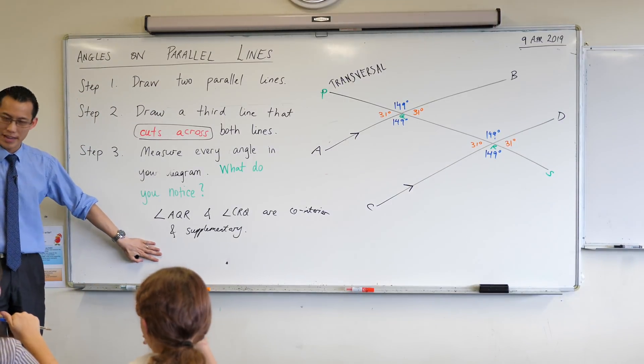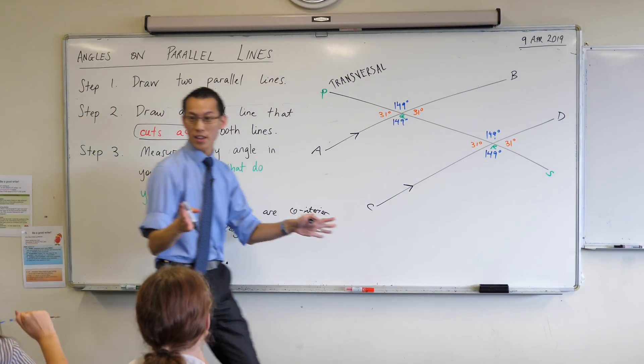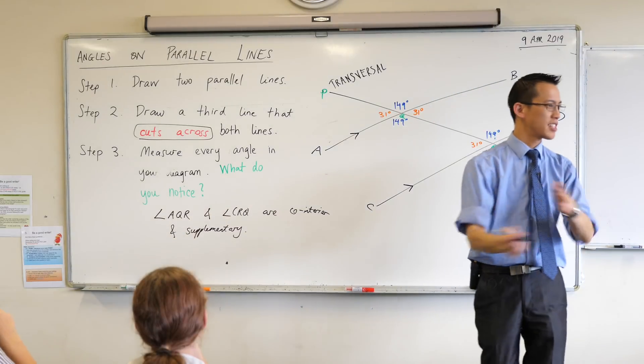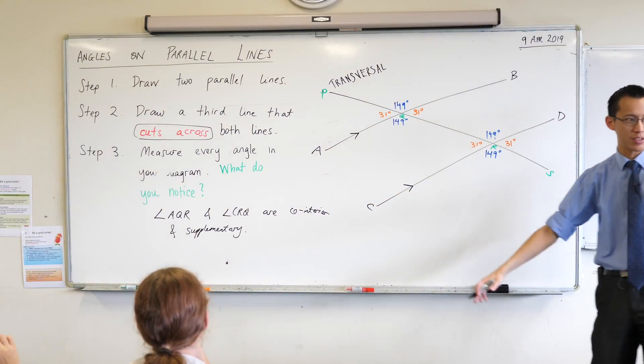So we've got co-interior and supplementary angles. That was the first thing that we observed. What's a separate thing? Something nothing to do with co-interior angles.